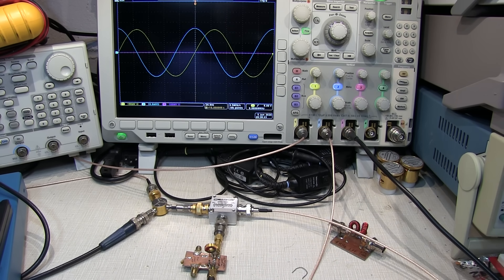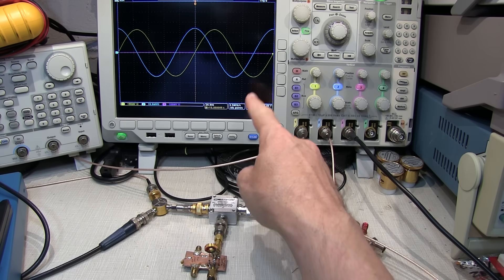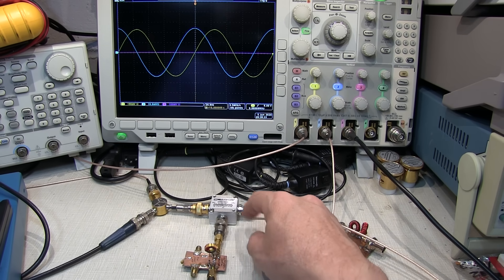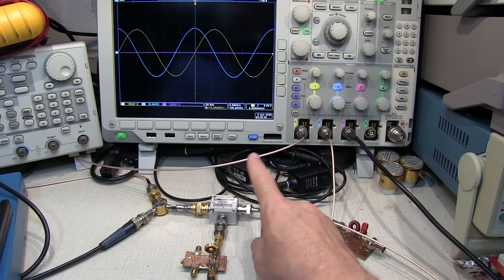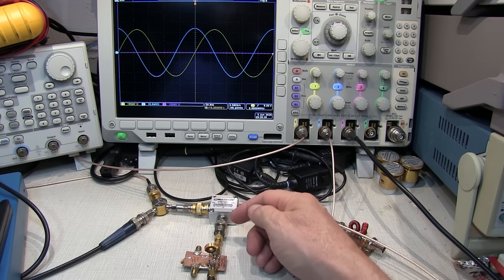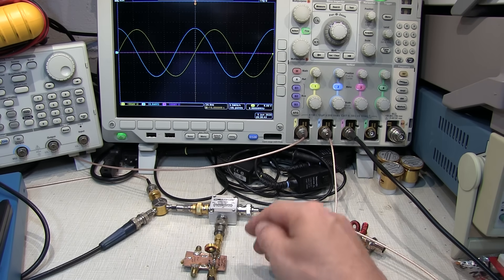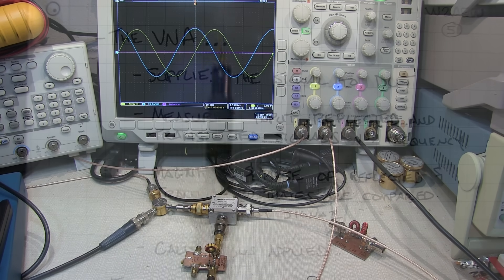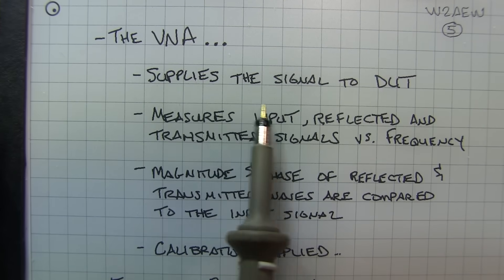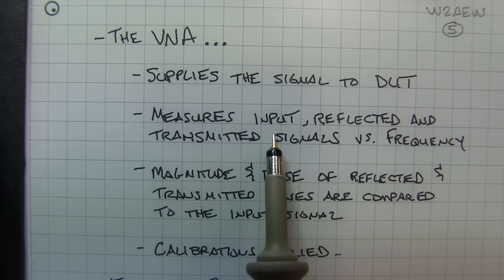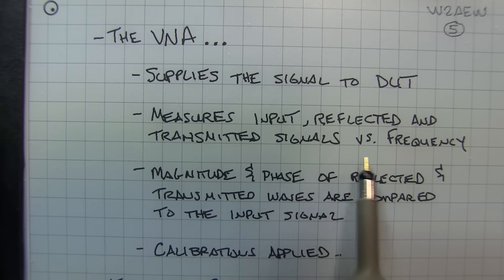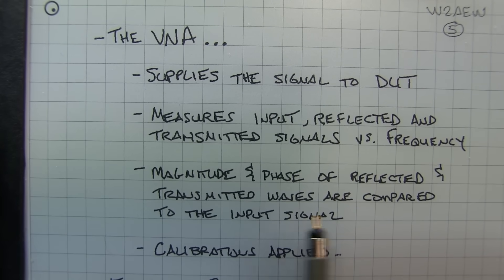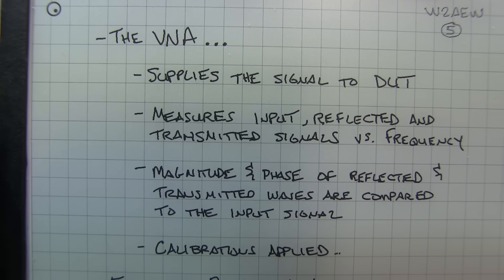One of the other important things a vector network analyzer does is measure very accurately the input signal and the reflected signal using an internal directional coupler. By carefully measuring the magnitude and phase of the input signal and the magnitude and phase of the reflected signal, we can compute many different reflection properties of the device under test. The job of the VNA is to supply the input signal to the device under test, measure the input, reflected, and transmitted signals versus frequency. The magnitude and phase of the reflected and transmitted signals are then compared to the input signal to compute various parameters.